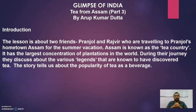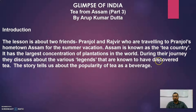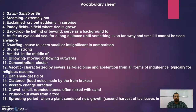Now the third part — Glimpses of India, Tea from Assam, Part Three, by Arup Kumar Datta. The lesson is a story of two friends, Pranjol and Rajvir, who are traveling to Pranjol's hometown Assam for the summer vacations. Assam is known as the tea country and has the largest concentration of tea plantations in the world. During their journey they discuss the various legends about the discovery of tea. The vocabulary sheet has eighteen words — please pause and note them down.